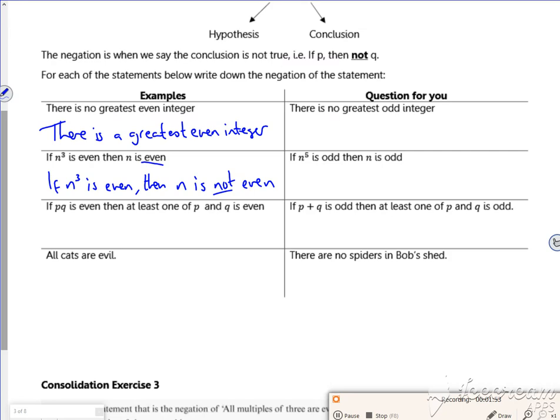If pq is even, then at least one of p and q is even. So that's kind of like at least one is even, so it's covering one of them or both of them, so the opposite is none of them. So if pq is even, then neither p or q are even.